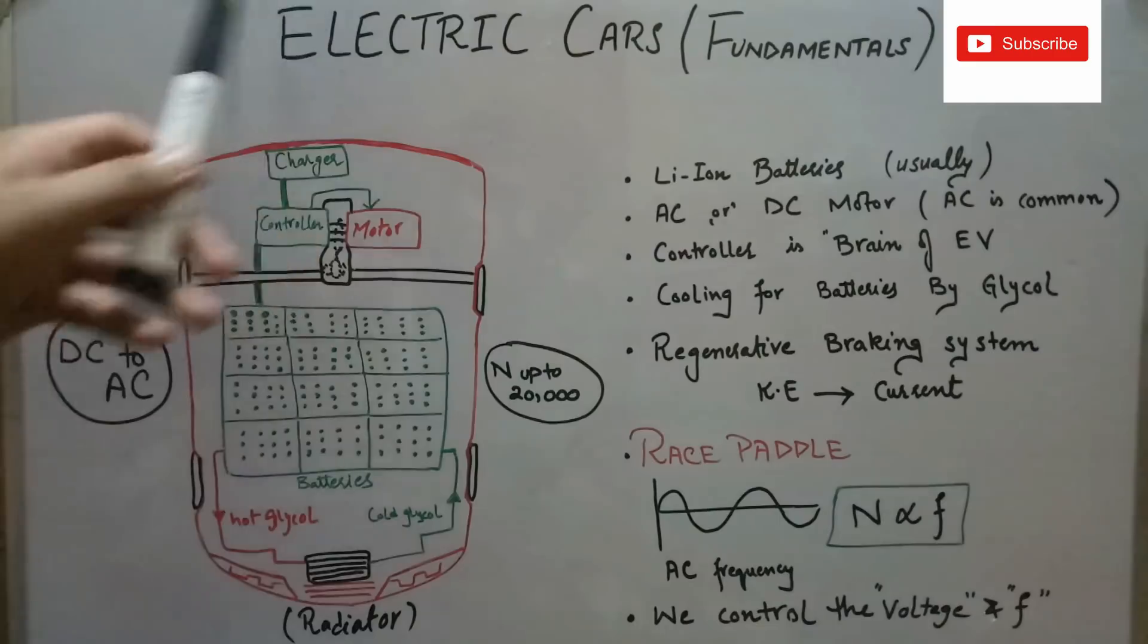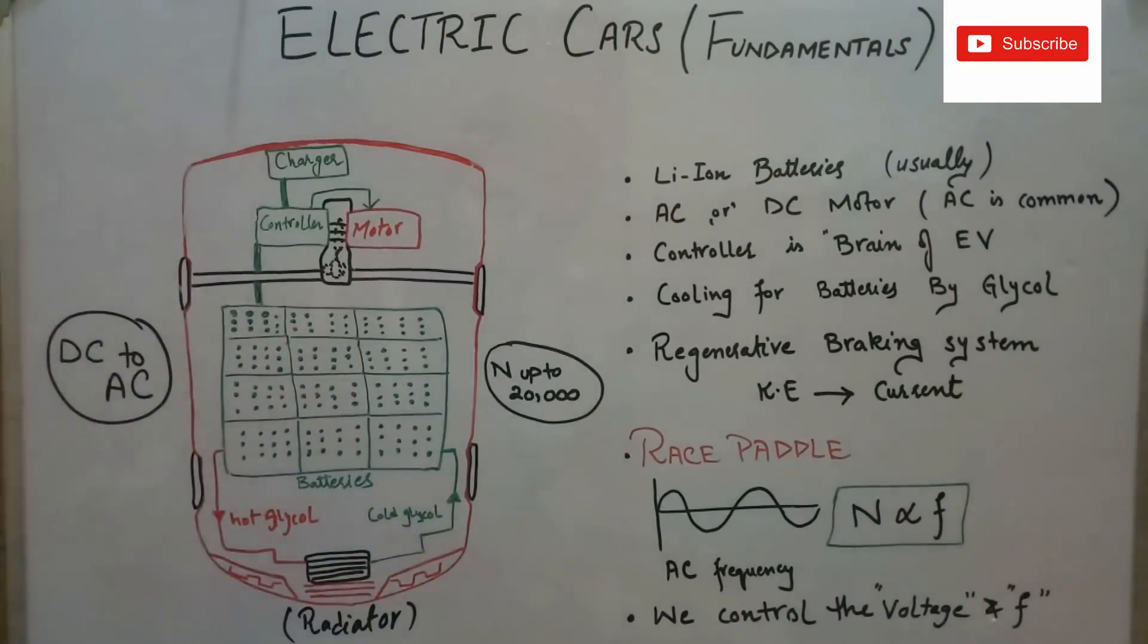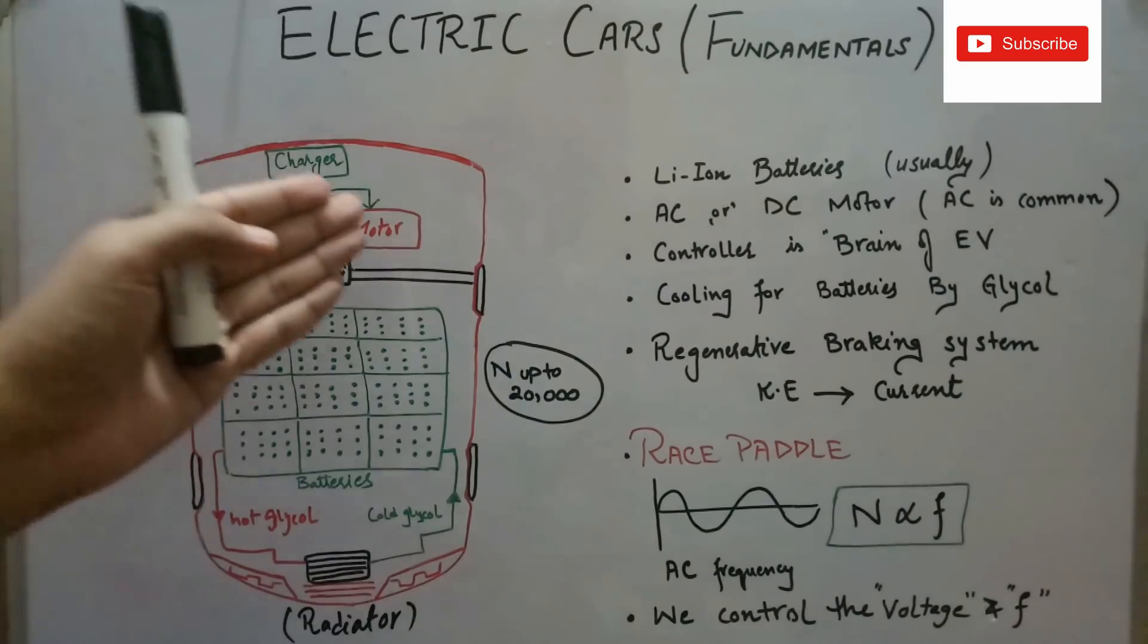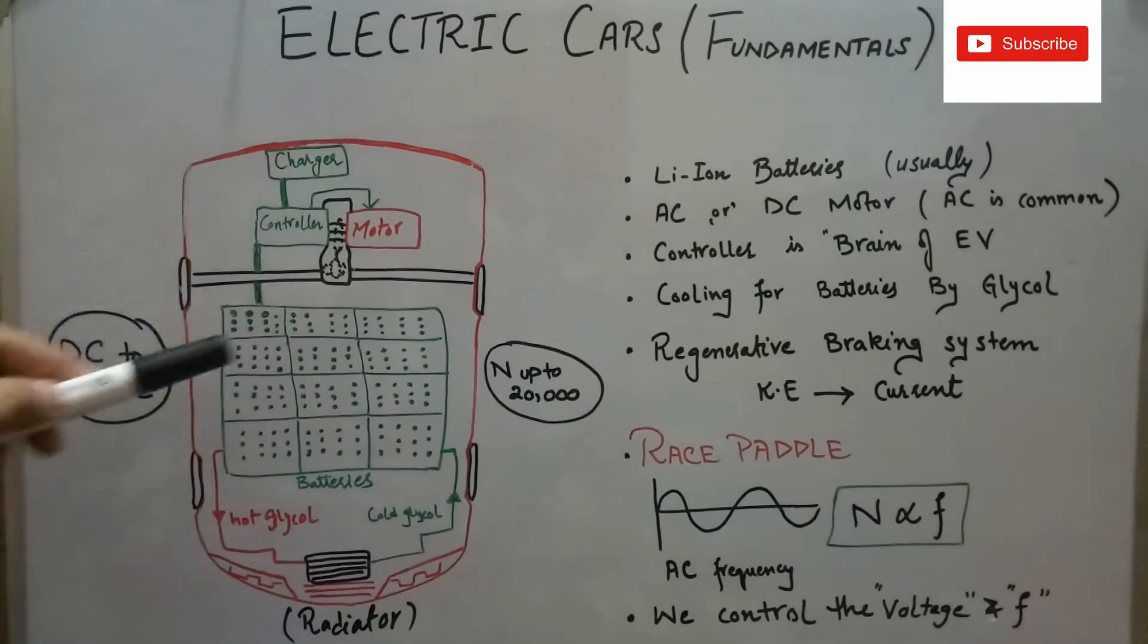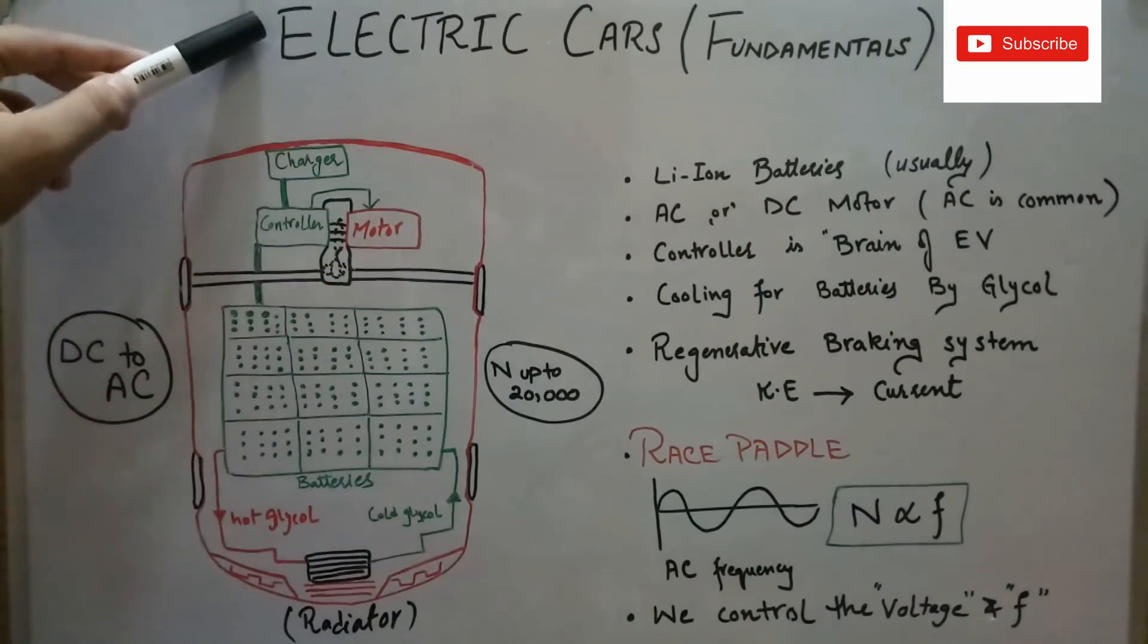So now let's see how it all works. The batteries here are producing DC voltage or current. The controller has to convert this DC voltage or current into AC voltage or current. Then the controller will provide the motor with 3-phase AC current, and the motor eventually rotates the driving wheels for the electric vehicle.